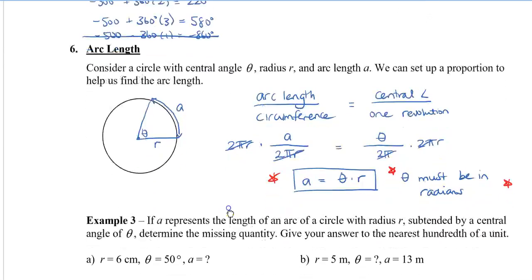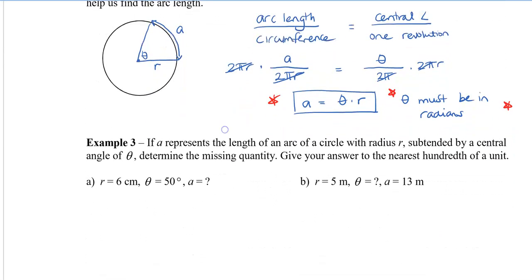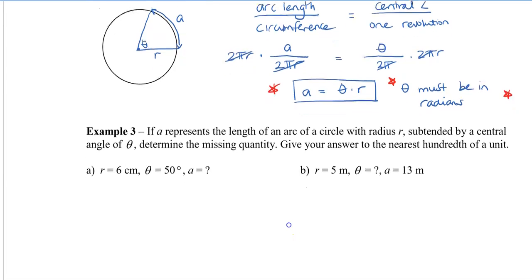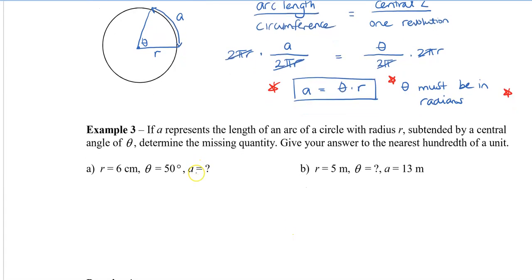So we'll take a look at a couple of examples. So if A represents the length of an arc of a circle with radius R and it's subtended meaning that it opens out to a central angle which is θ, we want to find the missing quantity. So give your answer to the nearest hundredth of a unit.